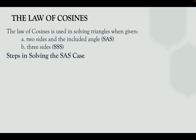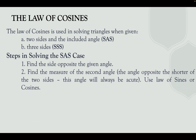Steps in solving the side-angle-side case: first, find the side opposite to the given angle. Next, find the measure of the second angle — the angle opposite the shorter of the two given sides; this angle will always be acute, and you may use the Law of Sines or Cosines. In the third example we will use both laws to compare if their answers are the same.